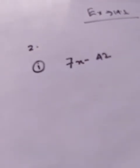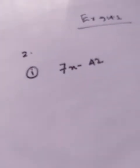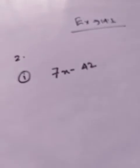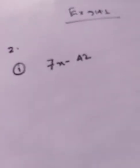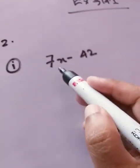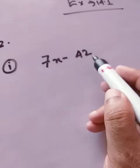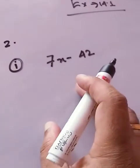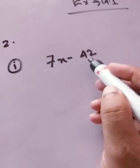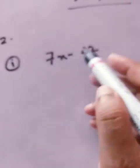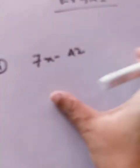In this session I will explain sum number one and sum number two of question number two. Now you see what is the first sum: 7x minus 42. Initially I gave you knowledge on this type of sum - if you see plus and minus signs between two or three terms, then you have to follow a specific method.